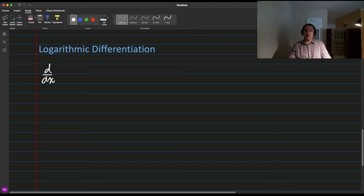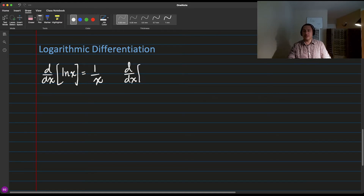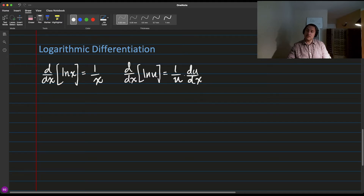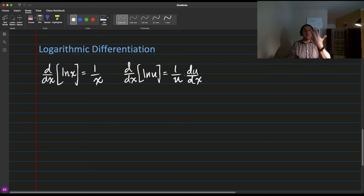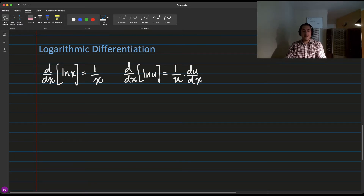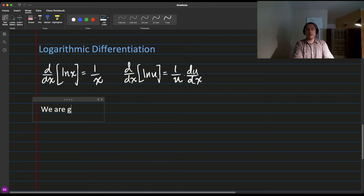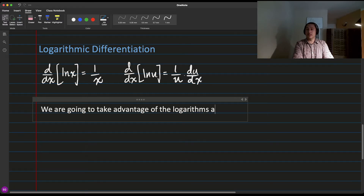Let's remind ourselves that the derivative of the logarithm is 1 over x. And if you're taking the derivative with respect to x of some complicated formula like the natural log of u, the chain rule tells you that this will be 1 over u times the derivative of u with respect to x. So there's this thing we're going to learn about called logarithmic differentiation, which takes advantage of the fact that the logarithm has some nice simplifying properties.